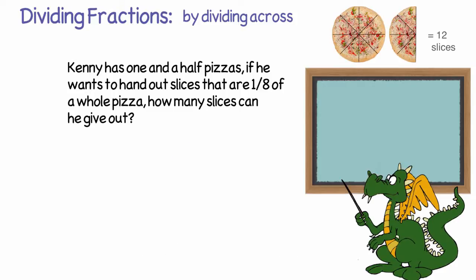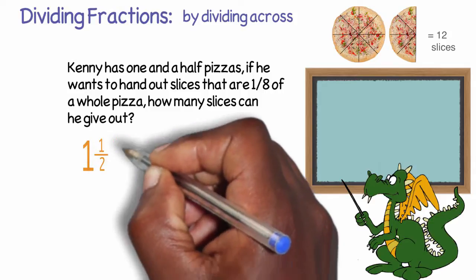Now, let's try solving the problem by getting a common denominator and just dividing across. In this scenario, we have one and a half pizzas and we're going to be making slices that are each the same size as one eighth of a whole pizza. That problem would be written as one and a half divided by one eighth.